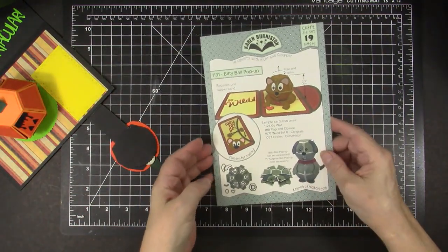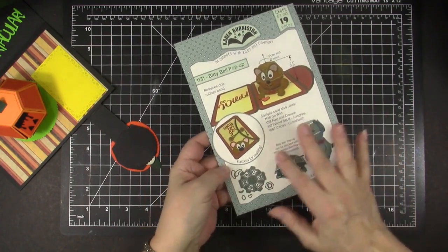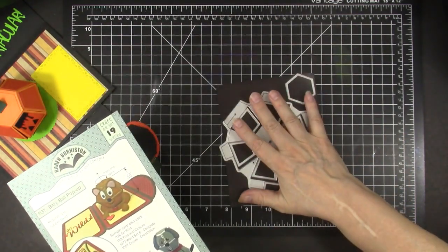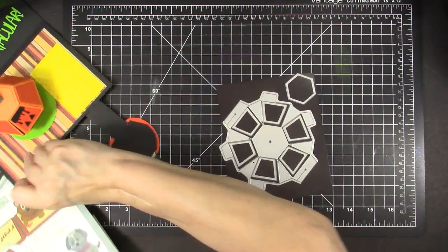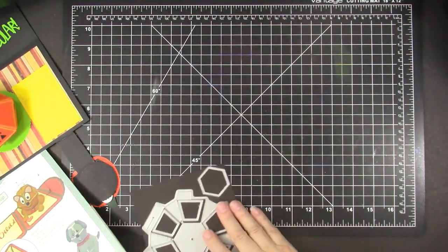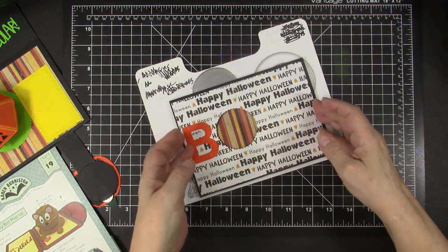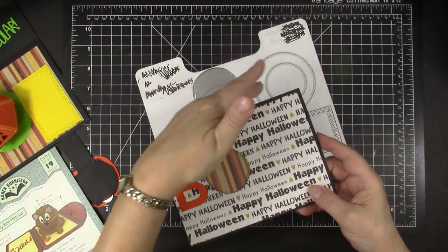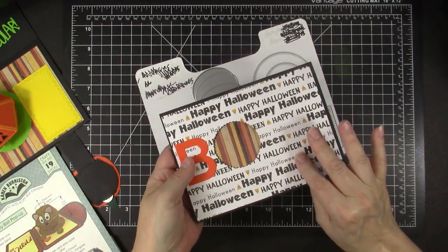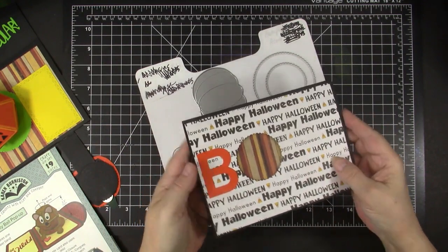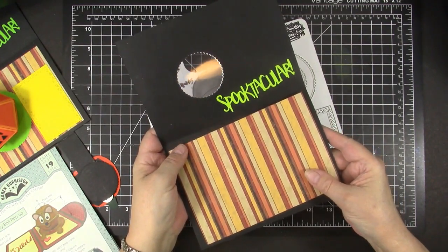I am using the new Bitty Ball pop-up die from Karen Burniston and it has all sorts of pieces and then these are the pieces that we will need to create the ball. I have cut a 5x7 top folding black card and the front designer paper is 4-3-4 x 6-3-4 and on the inside there's a piece that is 4-1-2 x 6-1-2.